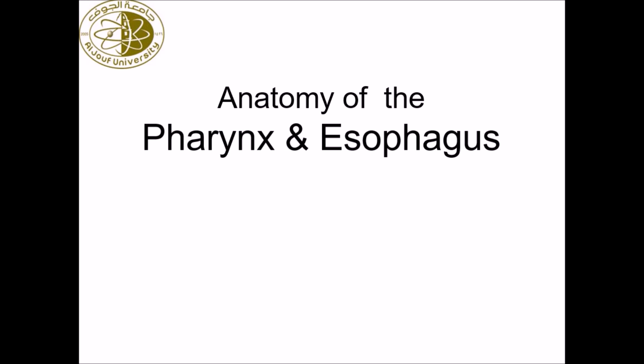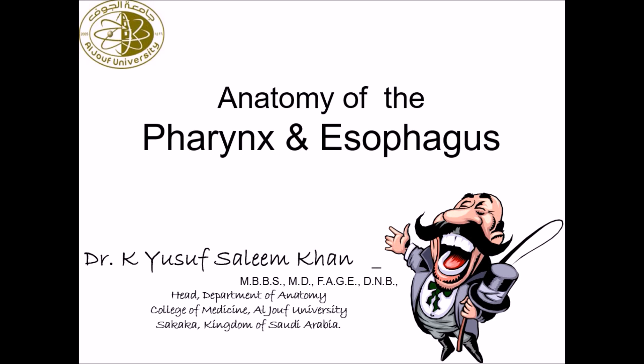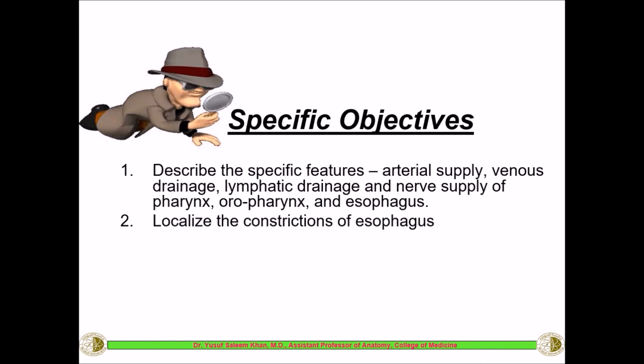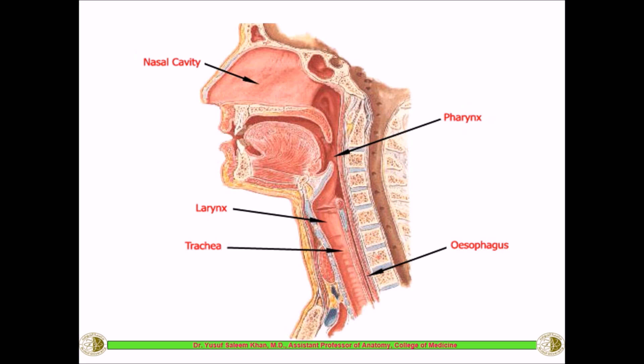Hello students. Today we'll be studying about the anatomy of the pharynx as well as the esophagus. This is Dr. Yusuf signing from Aljof University. These are the two specific objectives which we'll try to cover: describe the specific features like the arterial supply, venous drainage, lymphatic drainage and nerve supply of the pharynx, oropharynx as well as the esophagus, and localize the constrictions of the esophagus.